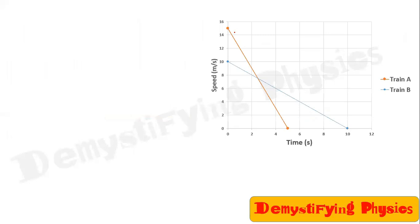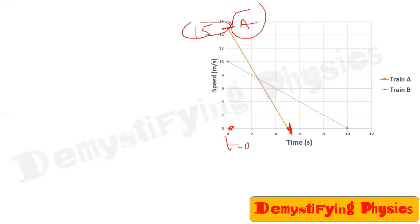For train A, the initial speed is 15 meters per second at time zero. It retards uniformly — a straight line sloping downwards — and the velocity becomes zero at 5 seconds. Similarly, for train B, at time zero it is moving at 10 meters per second, then it retards uniformly as a straight line, and at 10 seconds the velocity becomes zero.